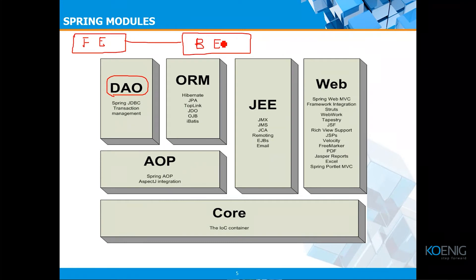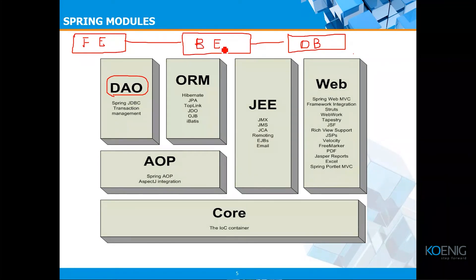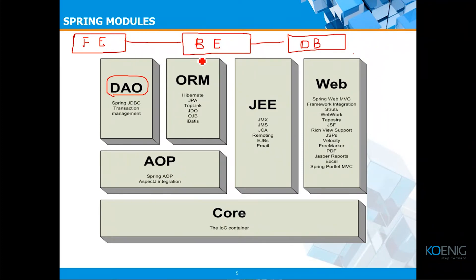Even front end and back end together are not enough — the back end also needs to connect to a database. So the application works like this: the user interacts with the front end, the front end communicates with the back end where business logic executes, and the back end connects to the database to create, modify, or remove data.